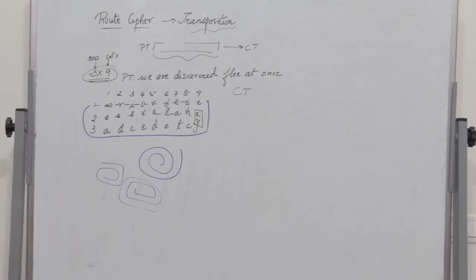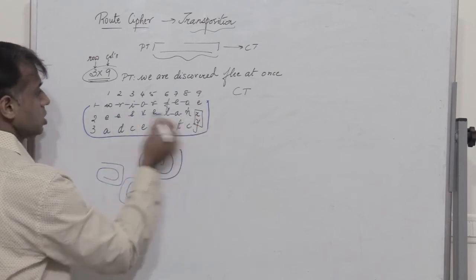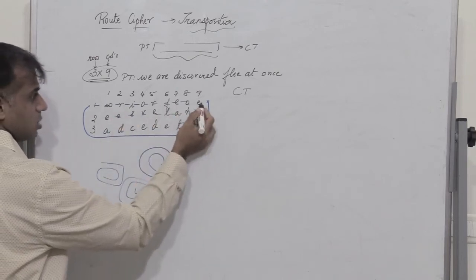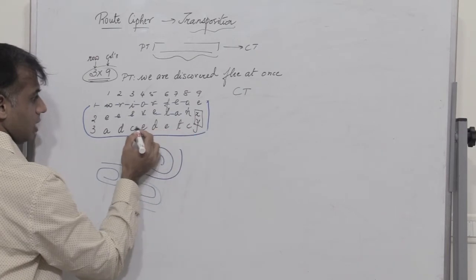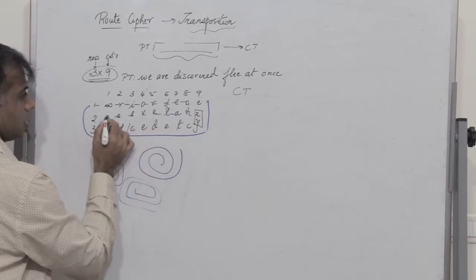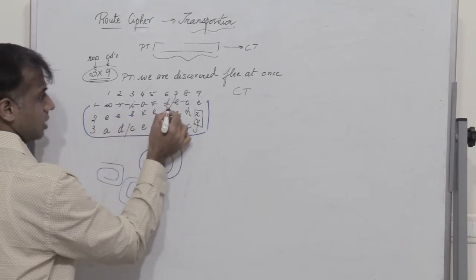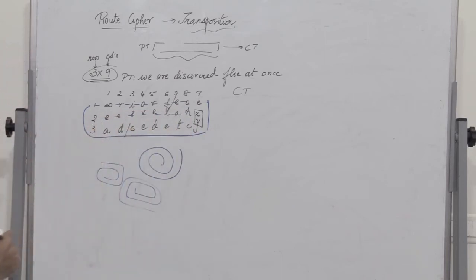So now I've formed a grid where we have three rows and nine columns. So what do I do? I consider nine alphabets. Each row has nine alphabets. So the first row has 9, the second row has 9, and the remaining nine here.